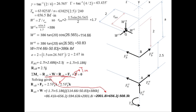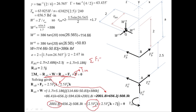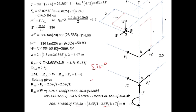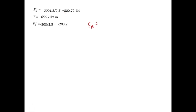Setting the sum of moments at A to zero, taking i components gives FBz = −800.7 lbf; taking j components gives the torque check of 656.2 lbf·inch; taking k components gives FBx = −203.2 lbf. Both FBz and FBx are negative. The resultant FB = √(FBz² + FBx²) = 826.1 lbf.